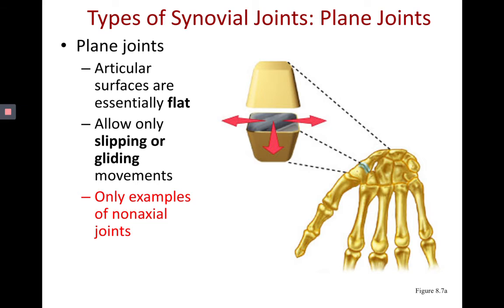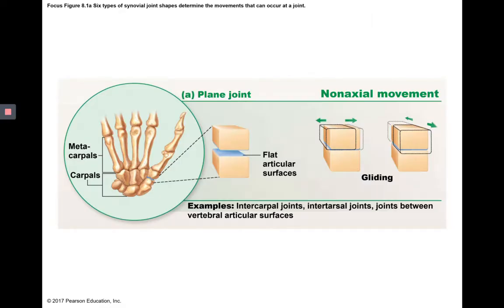Plane joints are non-axial. They generally have flat surfaces and are found, for example, between the carpal bones and tarsal bones. This is really the only example of a non-axial joint, and gliding movements are generally what they're capable of.